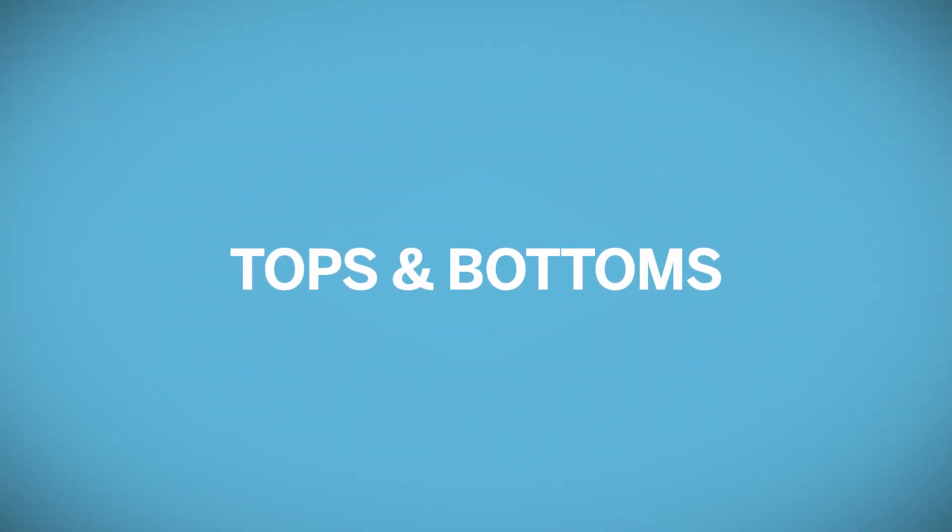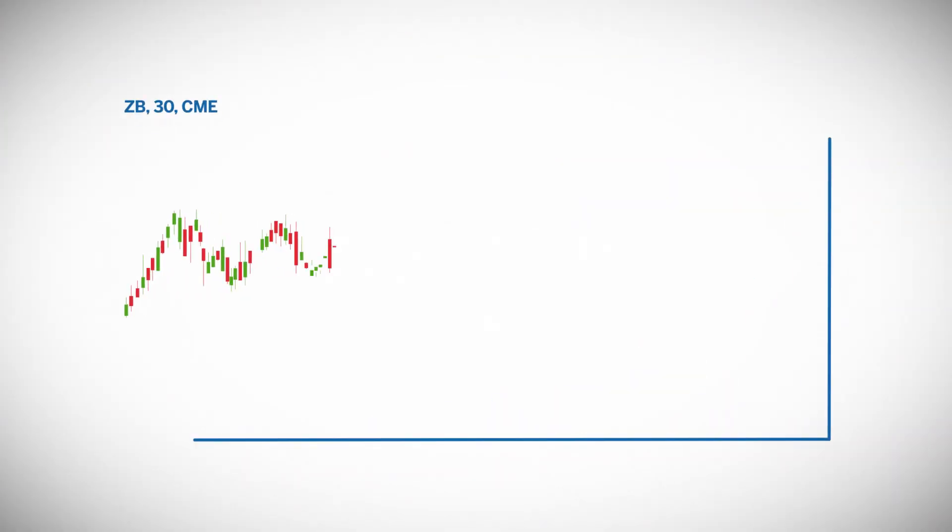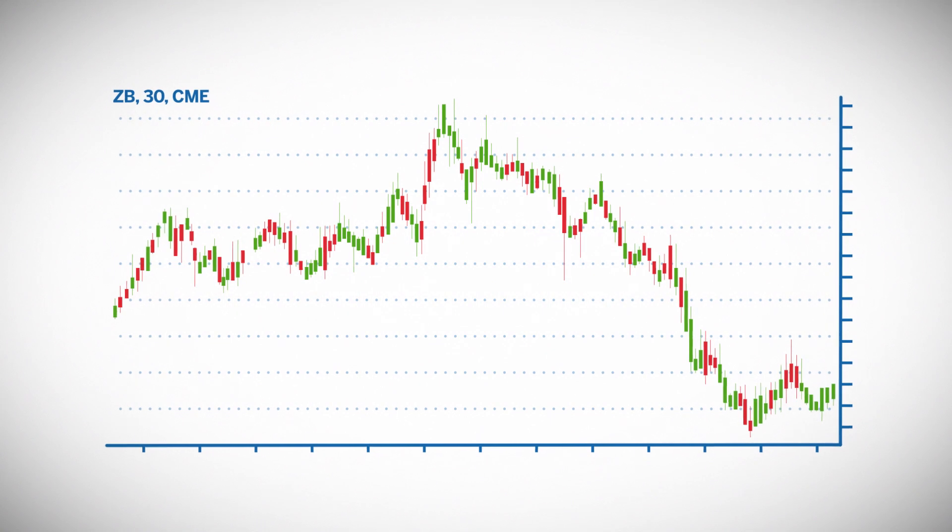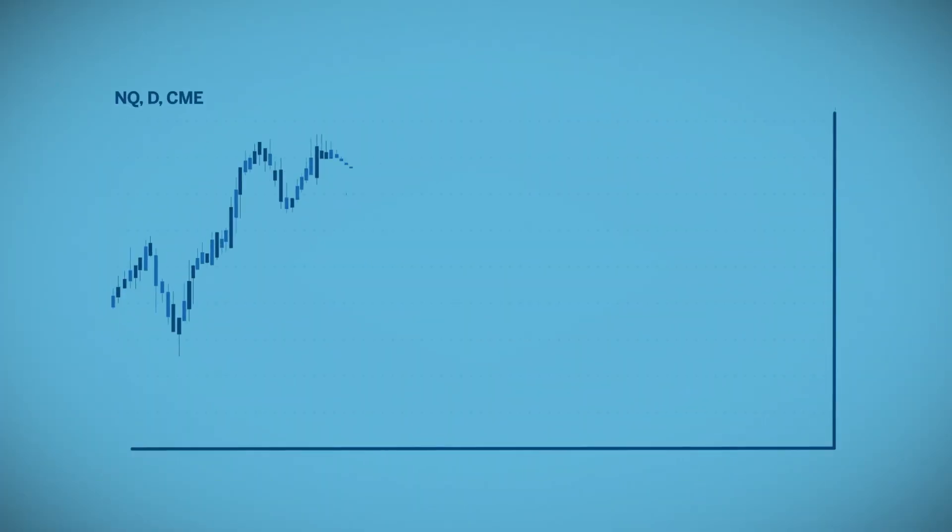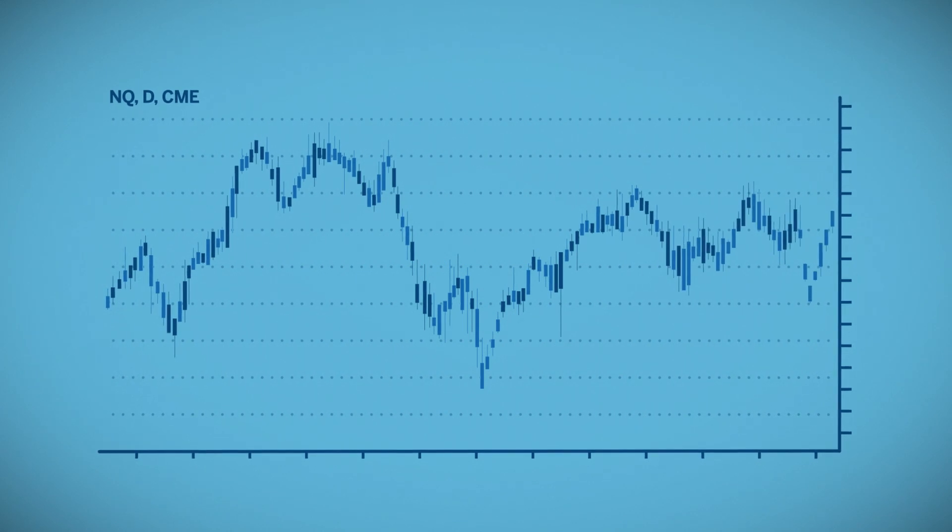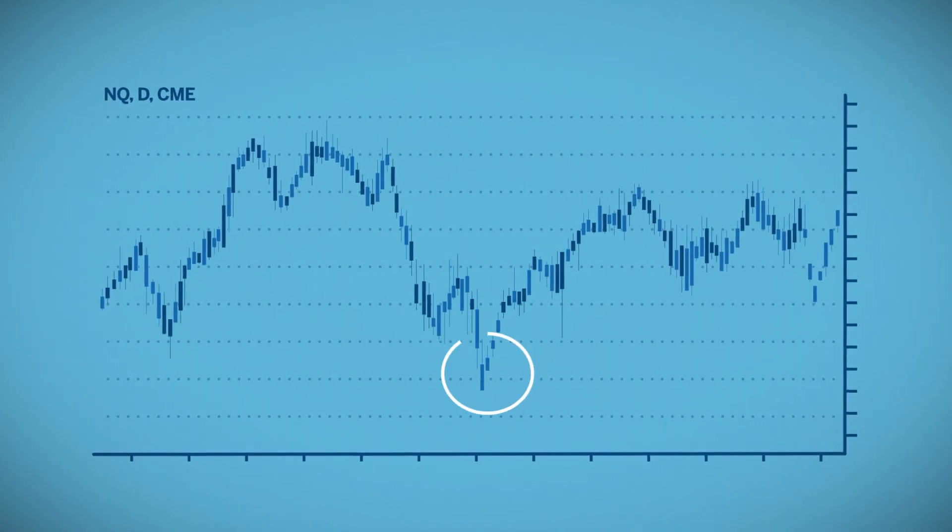The two patterns that are most recognizable for retracements or reversals are tops and bottoms. A top is created when price creates a higher high, followed by a higher high, and then a lower high. A bottom is created when price creates a low, followed by a lower low, then a higher low.